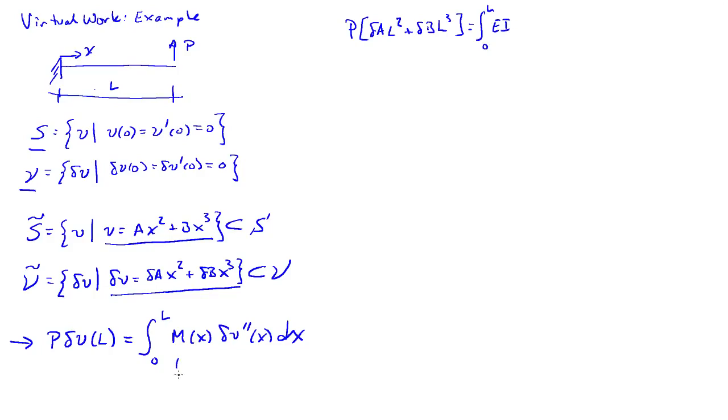So the moment is EI times the curvature. So EI two derivatives of V. So I need EI times two derivatives of V, which is going to give me two A plus six B X. And then the virtual curvature will have the exact same form, except we just have del A's. So two del A plus six del B X dx.